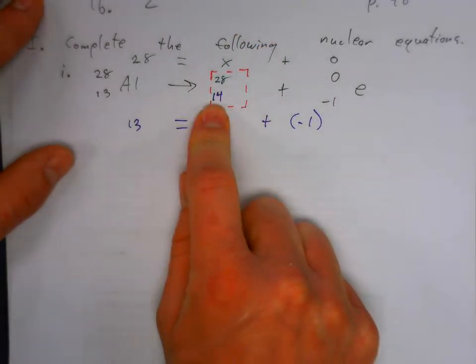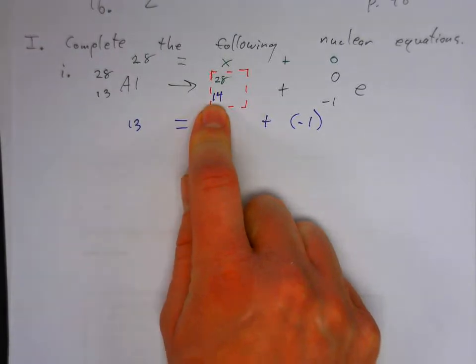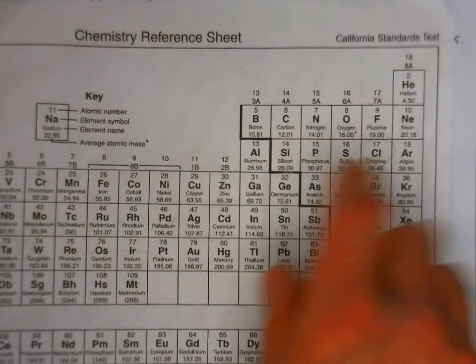Now we just look up the element that has atomic number 14, and that's silicon.